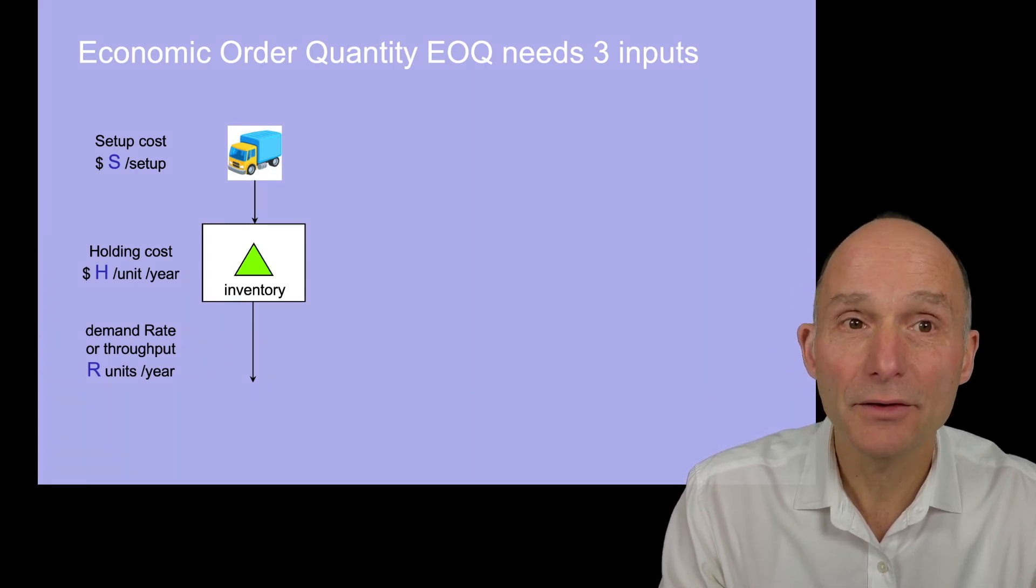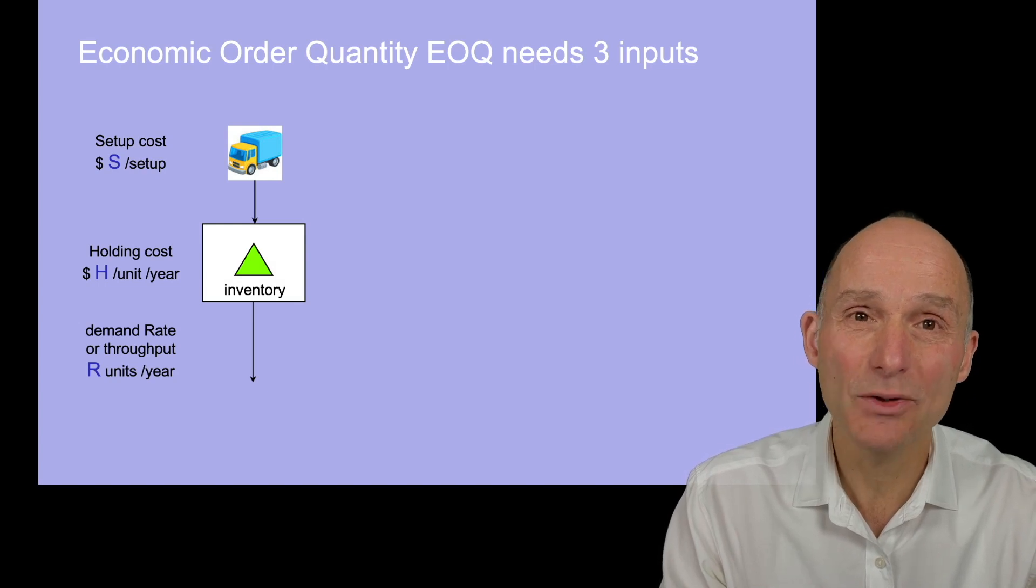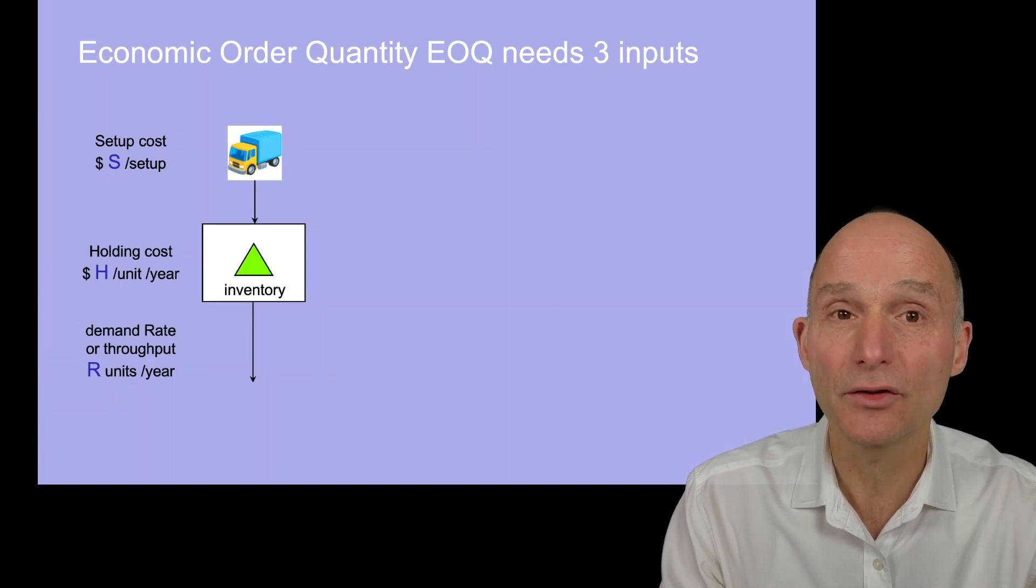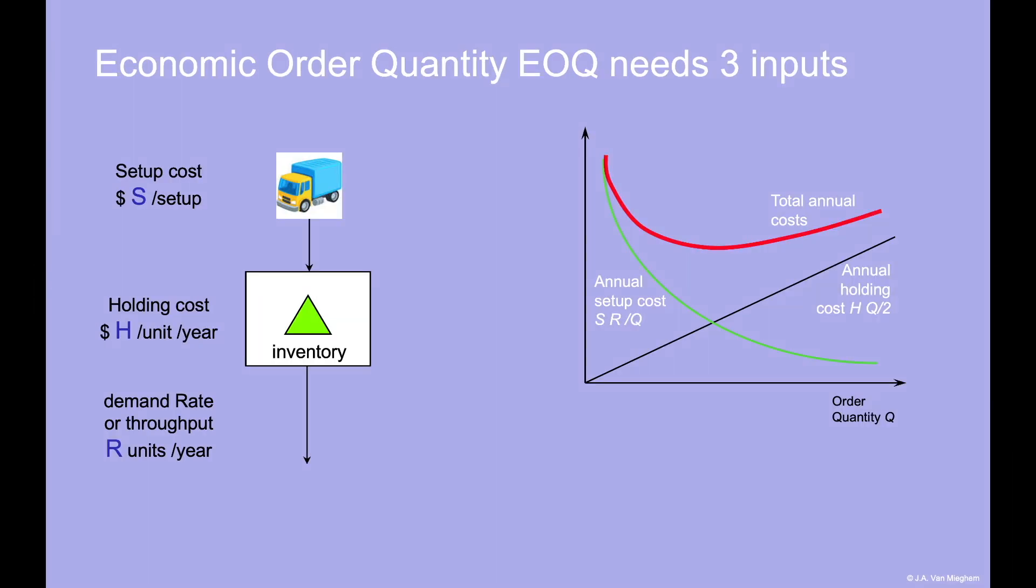With the two monetary conversion factors, we can monetize the annual setup and the annual inventory holding cost, and compute their total cost curve. Using calculus, we know that the total cost has a unique minimum. And that is exactly the famous EOQ solution. The key insight is that both the optimal quantity and the optimal total cost scale with the square root of the demand. And thus, companies should also scale their order frequency with the square root of the demand.